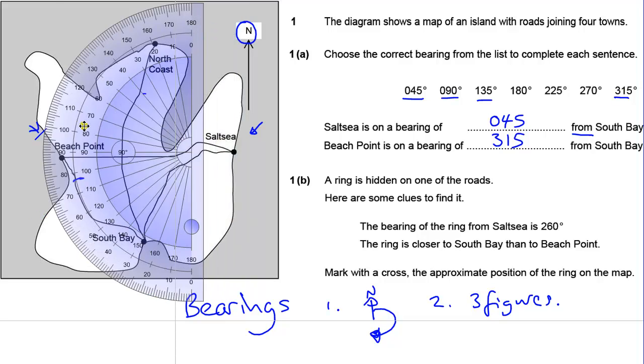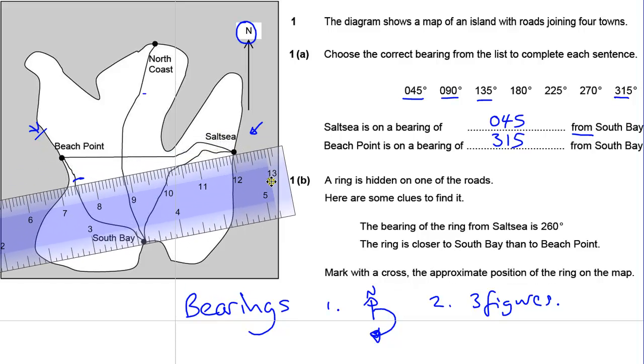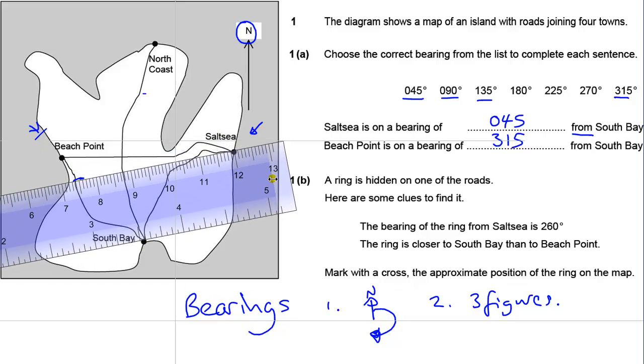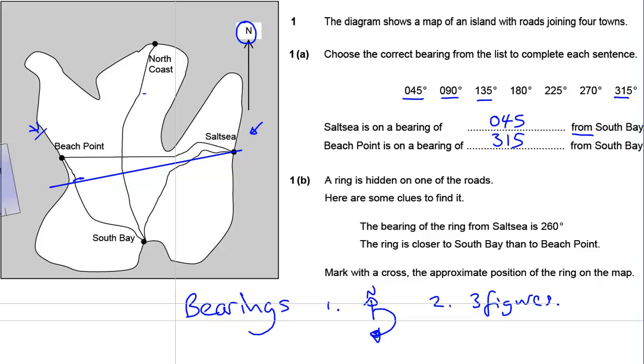Then I'm going to get my ruler, and I'm going to place that on here so that I can draw a line between Saltcea and my 260.